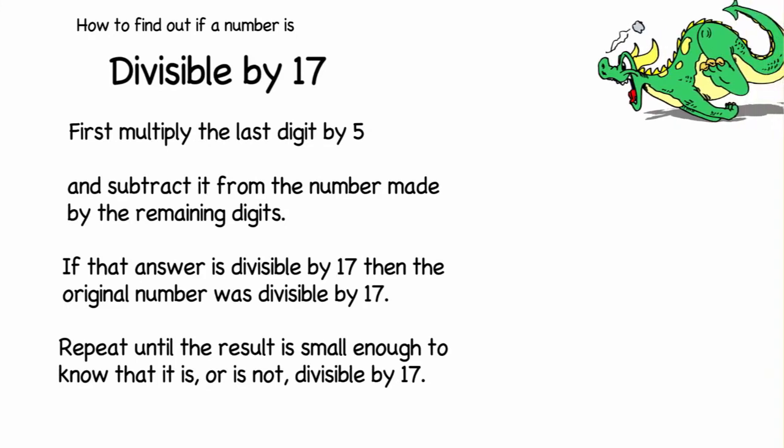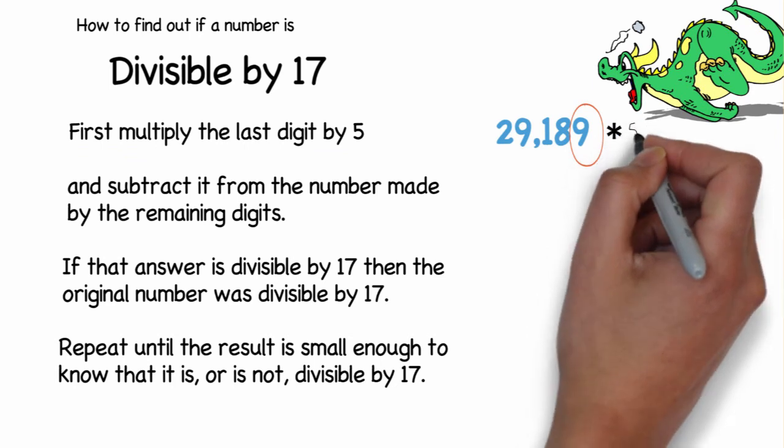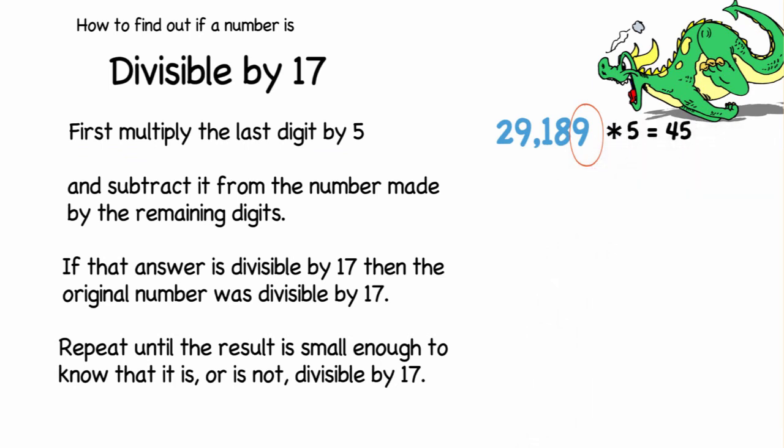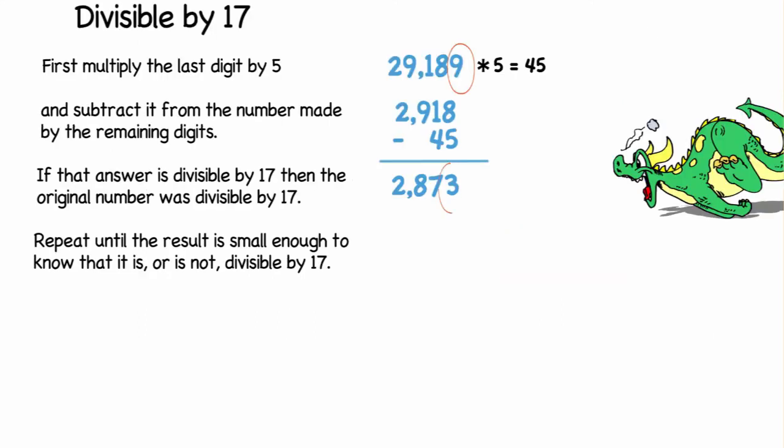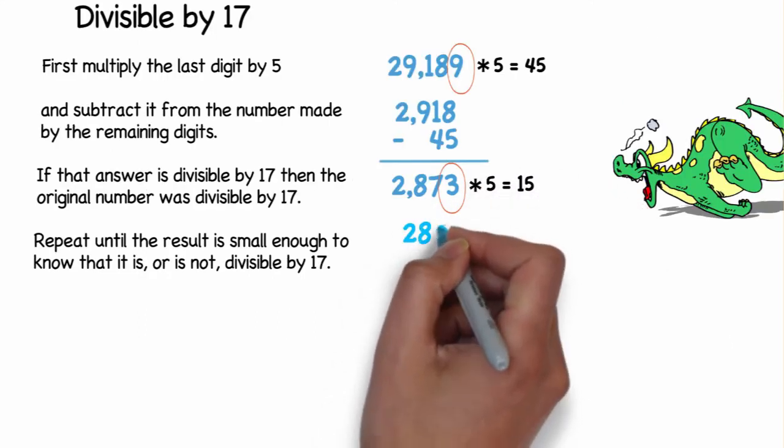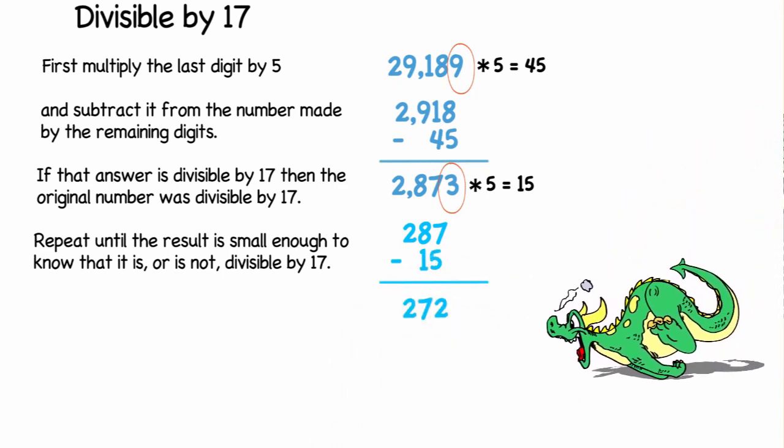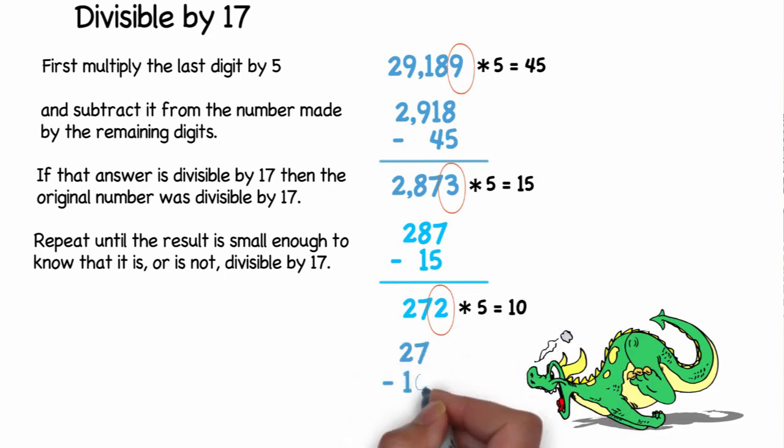This is the last number that we will be doing in our divisibility rules. It is 17. Our example number is 29,189. The rule for 17 is you multiply the last digit by 5 and then you subtract it from the truncated number made by the remaining digits. So, you take the 9, multiply it by 5, then subtract 45 from 2,918, getting 2,873. Then, 3 times 5, 15. 287 minus 15, 272. Next, 2 times 5, 10. 27 minus 10, 17. And 17 is divisible by 17.